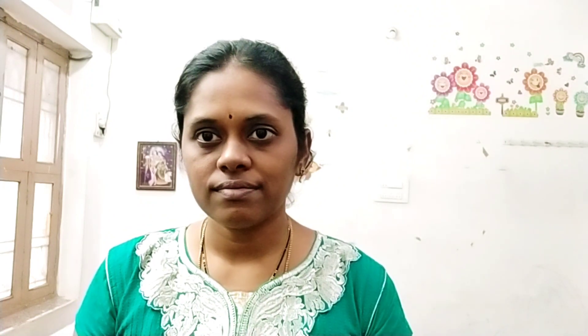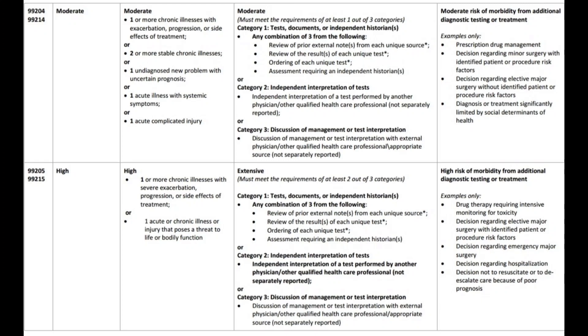For office visits especially, we have a new prolonged service code for each additional 15 minutes — this code is 99XXX. This code goes with 99205 and 99215. Looking at the table provided by AMA: 99201 has been deleted; 99211 remains; 99202 and 99212 are straightforward or minimal risk; 99203 and 99213 are low risk in the MDM table; 99204 and 99214 are moderate risk; and 99205 and 99215 are high risk. Read the bullet points and assign the code as per the description in the medical record.